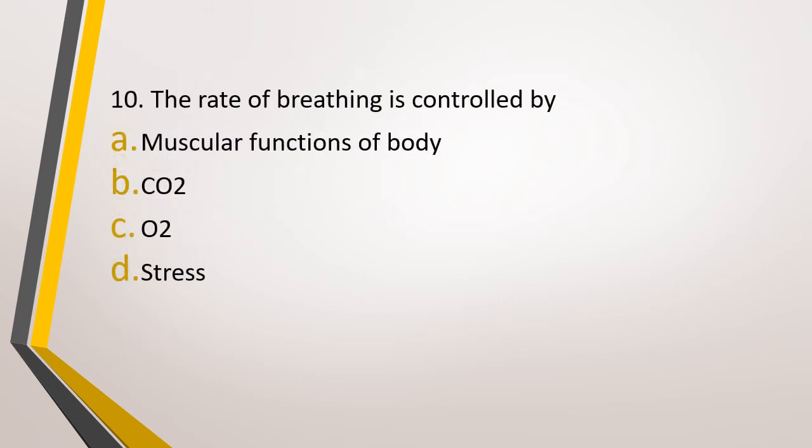Question number 10. The rate of breathing is controlled by. Option A: Muscular function of body. Option B: Carbon dioxide. Option C: Oxygen. Option D: Stress. The correct answer is option B, that is the amount of carbon dioxide that is present in the blood controls the rate of breathing. And it has been observed that oxygen actually has no role in controlling the rate of breathing.